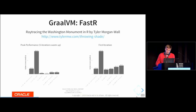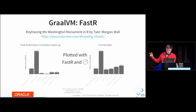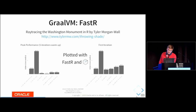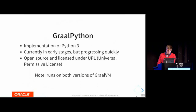The second reason to use FastR is compatibility with GNU R. For example, ggplot2 works — these two plots are actually SVG images that I've created with FastR and ggplot2.